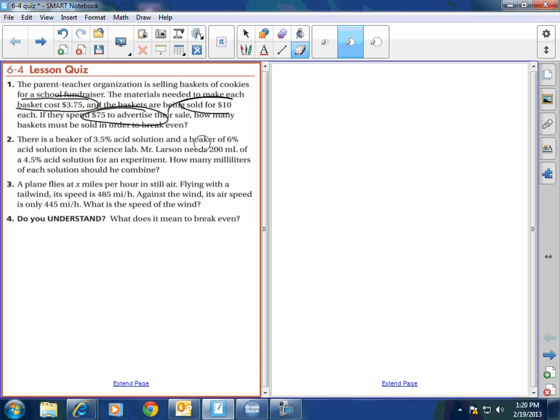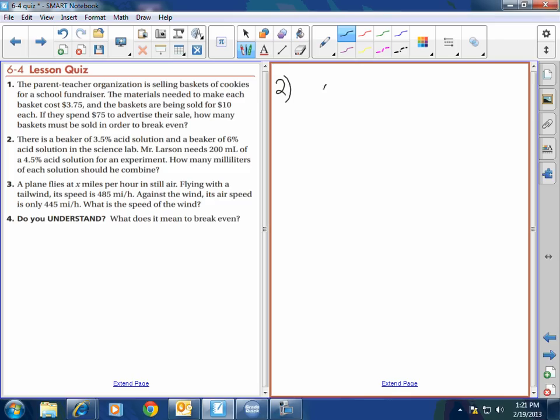Okay. Number two. I'm going to just do the setups for all of these, because by now I'm hoping the mechanics are there. There's a beaker of 3.5% acid solution and a beaker of 6% acid solution in the science lab. Mr. Larson needs 200 milliliters of a 4.5% acid solution for an experiment. How many milliliters of each solution should he combine? Well, first things first, as always, I'm going to call X the number of milliliters of 3.5% solution.